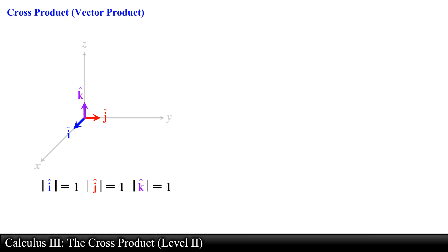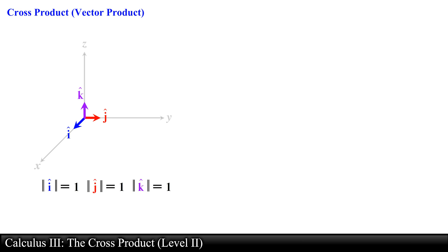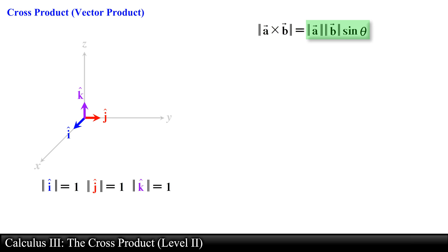This would be pretty straightforward since the unit vectors i hat, j hat, and k hat all have a magnitude equal to 1, and they are perpendicular to each other. Recall from the previous video that the cross product between two vectors in space can be found by taking the product of the magnitudes of each vector times sine of the angle between the vectors.